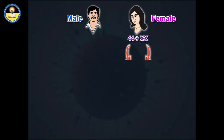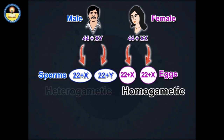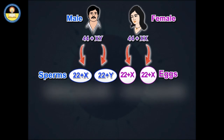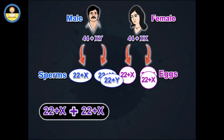The female gamete in humans is said to be homogametic because all its cells possess the X chromosome. Sperm gametes are heterogametic because around half of them contain the X chromosome and the other half carries the Y chromosome. Since sperm is a variable factor, it is responsible for determining sex. There are two possibilities that can occur during fertilization.